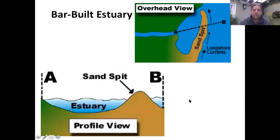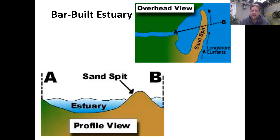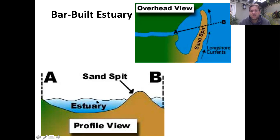The next example is our bar-built estuaries. A bar-built estuary could be a sand spit, a baymouth bar, or a barrier island — anywhere you've got sand piling up, a lagoon behind it, and a river moving into it. Bar-built estuaries, because they're depositionally formed, are going to be somewhat shallower. On the East Coast and Gulf Coast we have enormous barrier islands, so that's one location where you can almost always find a bar-built estuary.